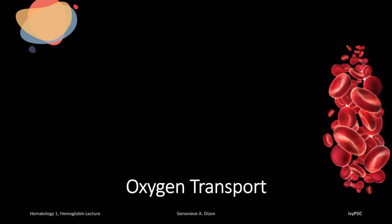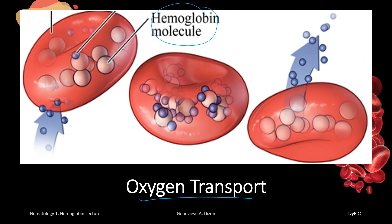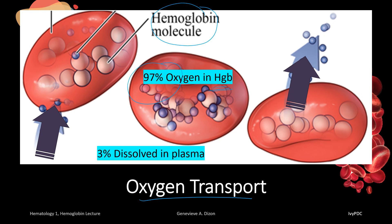For oxygen to be transported efficiently throughout the body, the hemoglobin molecule should be able to readily bind with oxygen in the lungs. Under normal conditions, oxygen is carried to the tissues almost entirely by hemoglobin — 97% of the oxygen is carried in chemical combination with hemoglobin. The remaining 3% is dissolved and transported in the plasma.